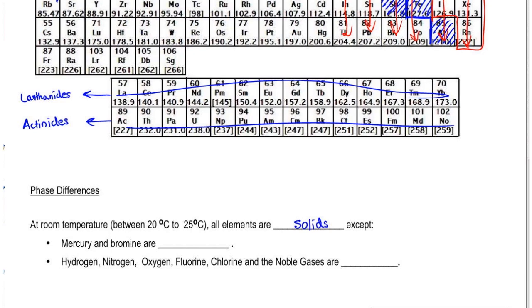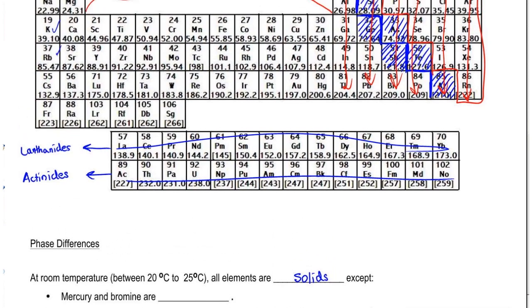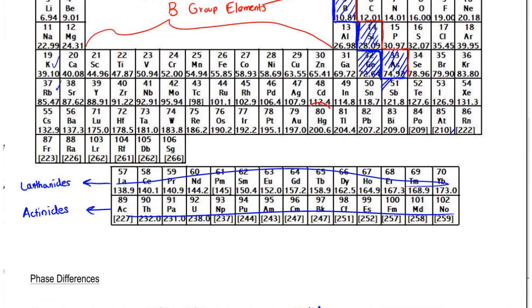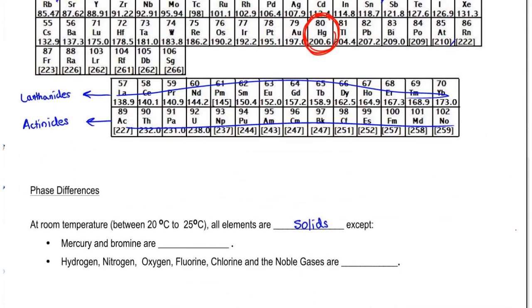Here we're going to say that mercury - Mercury is Hg, which is right here. And bromine, which is right here, Br. These two elements don't exist as solids at room temperature; instead they exist as liquids. Just think of the mercury in a thermometer. Mercury is a liquid.